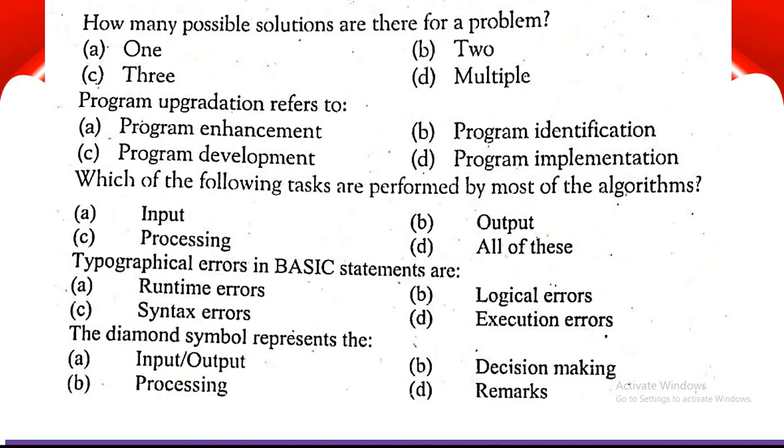Our next MCQ is: How many possible solutions are there for a problem? Option A one, option B two, option C three, and option D multiple. We know every problem has a number of solutions, so its correct answer is option D multiple.